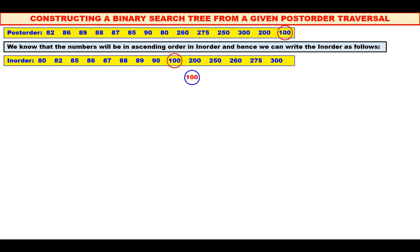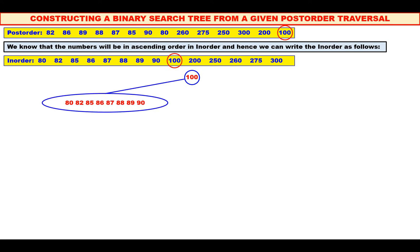Mark 100 in inorder also. All the elements to the left of 100 are in the left sub-tree, and all the elements to the right of 100 are in the right sub-tree. Since it is post-order, we have to consider the right one. Among 200, 250, 260, 275, 300, which is the root? See the post-order — the last element is 200. So 200 is the root.